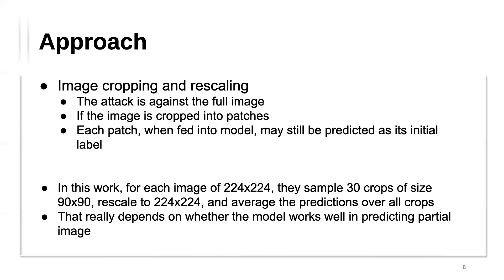The first transformation is image cropping and rescaling, often used in data augmentation. The intuition is that since the attack is against the full image, if the image is cropped into small patches, each patch may still be predicted as its initial label. In this work, for each image they randomly sample 30 crops of size 90x90, feed each crop, get all the predictions, and average over all crops. However, this depends on whether the model works well at predicting partial images.